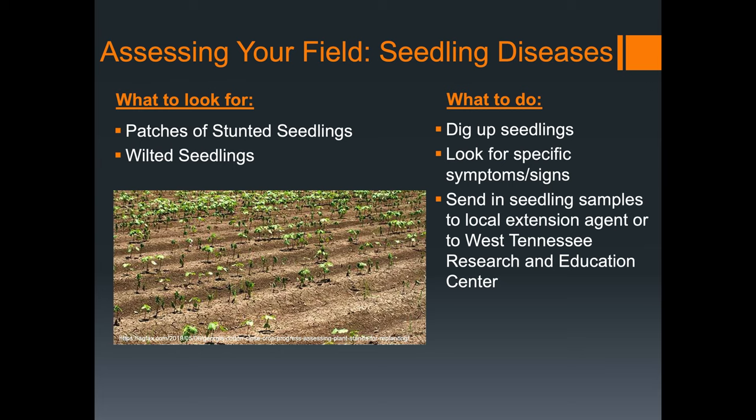It's also very important to look at your field surroundings. Make sure that you look for stunted growth of the seedlings or wilted seedlings. It is also beneficial to dig up seedlings to look for symptoms and signs, and if you're still unsure of what's going on, send in a sample to your local Extension agent or at the West Tennessee Research and Education Center.